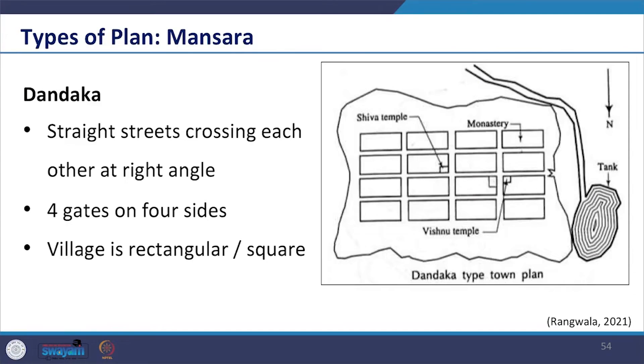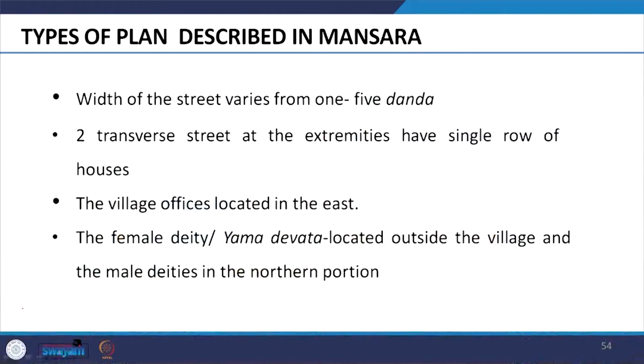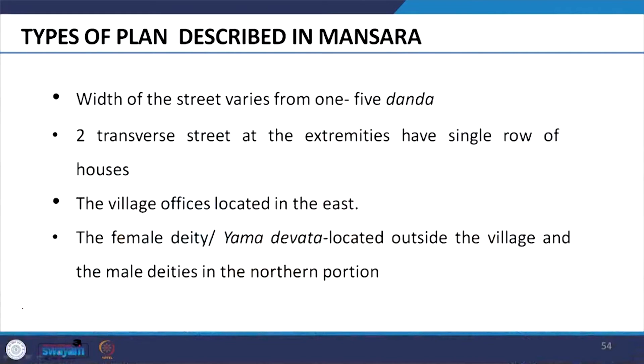Looking at Dandaka, we see that in this type of plan streets are straight and cross each other at right angles at the centre. Villages had four gates on four sides and the village would be rectangular or square shaped. Width of the street would vary from one to five Dandas. Two transfer streets at the extremities would have a single row of houses. The village office would be located in the east, the female deity Yama Devata located outside the village, and the male deities in the northern portion.